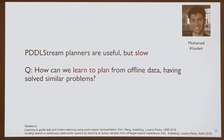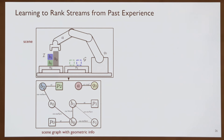With my student Mohammed Courier, we asked: these planners are useful but slow—can we learn to plan from offline data, assuming we've solved similar problems? The idea is that as you get more planning experience, your planning time should decrease and the number of problems you can solve should increase. This relates to work Unjoon Kim did during his PhD but with different methods and formulations.